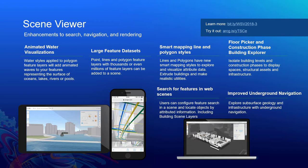Scene Viewer is the component of ArcGIS Online and Enterprise used to author and serve large performant scenes. It utilizes the ArcGIS API for JavaScript, so features and functionalities you see in the JavaScript API will also show in Scene Viewer. Recent additions include animated water visualizations, the ability to visualize large feature datasets, smart mapping for line and polygon styles such as extrusions, searching for features in web scenes, and in Building Explorer the floor picker, construction phase filtering, and improved underground navigation with context-aware navigation.